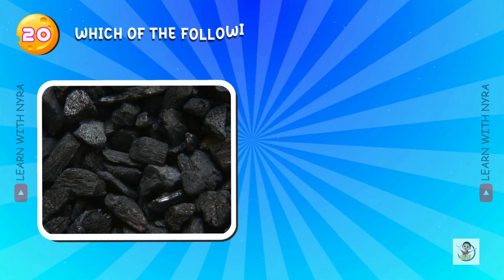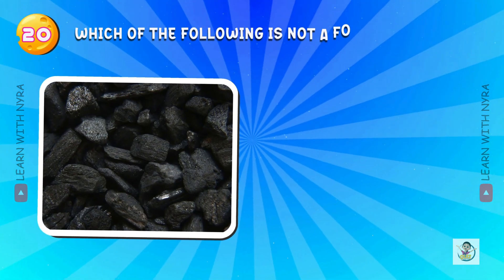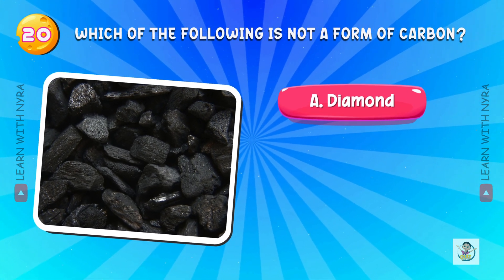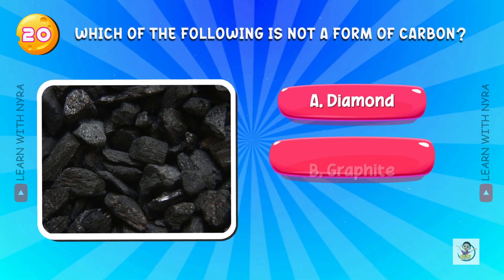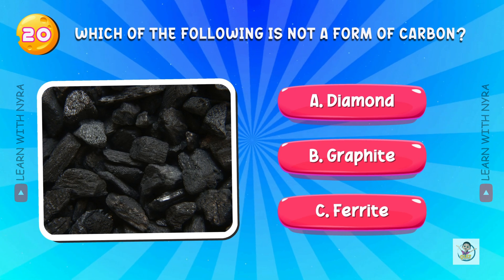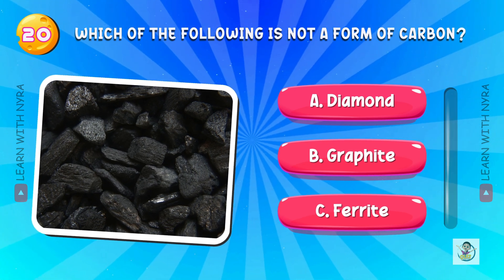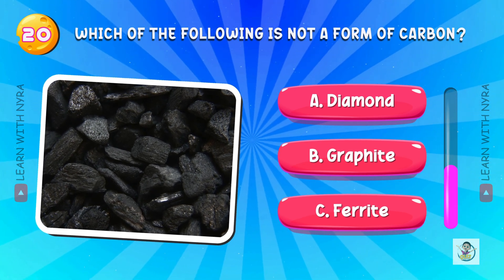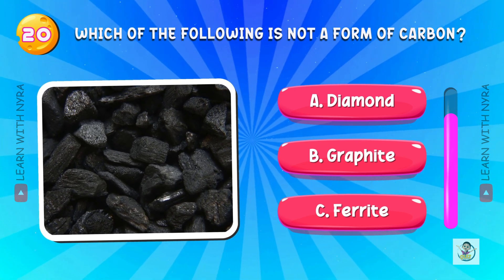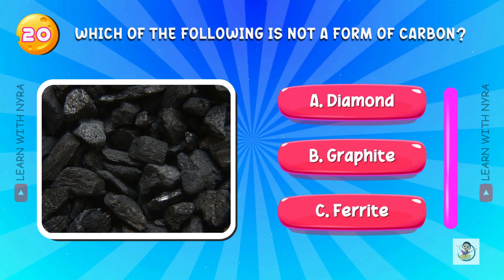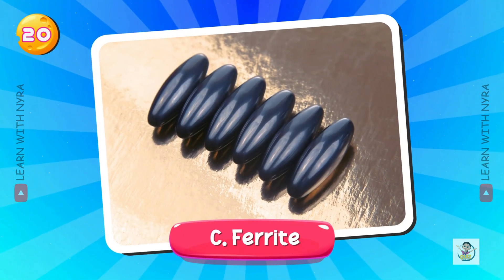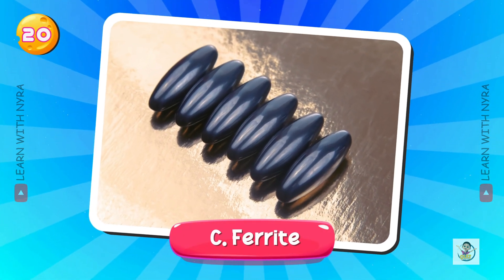Which of the following is not a form of carbon? A. Diamond, B. Graphite, C. Ferrite. And the answer is C. Ferrite.